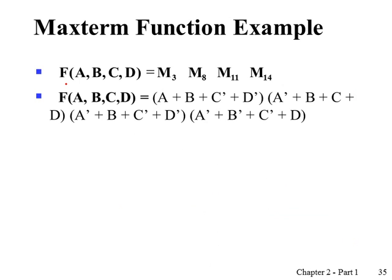For a four-variable function expressed as a product of maxterms form — where product means AND operation — we can find the original expression by replacing each maxterm with its Boolean expression. Index three means binary pattern zero-zero-one-one, where zero is in true form and one is in complement form in the maxterm, so a OR b OR NOT c OR NOT d is maxterm three. Maxterms eight, eleven, and fourteen are similarly derived.